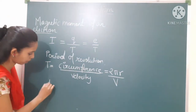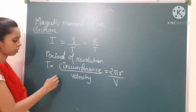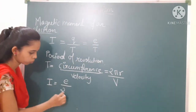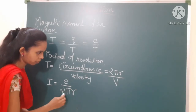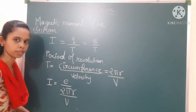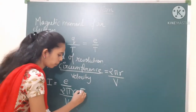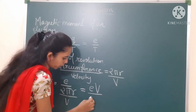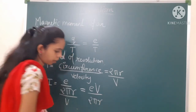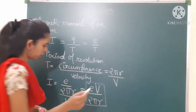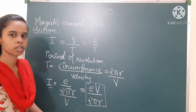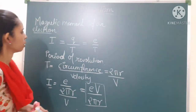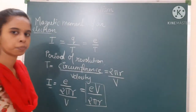Now let us substitute this formula into the current equation. The current I = e divided by (2πr/v), so v comes to the numerator, giving I = ev/2πr. This is the current produced due to the revolution of the electron.